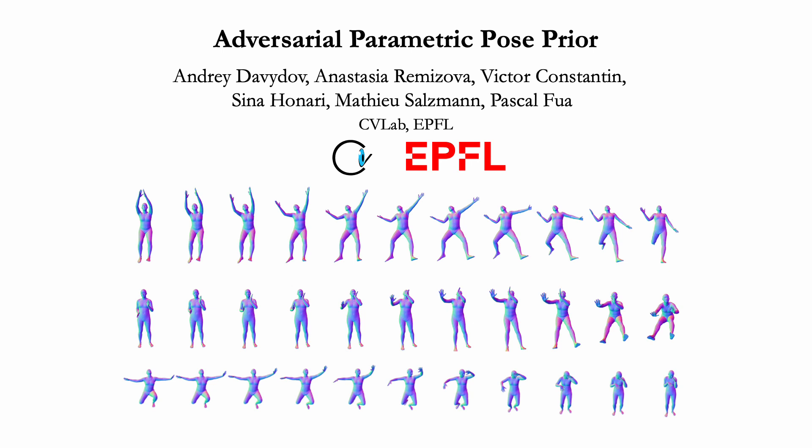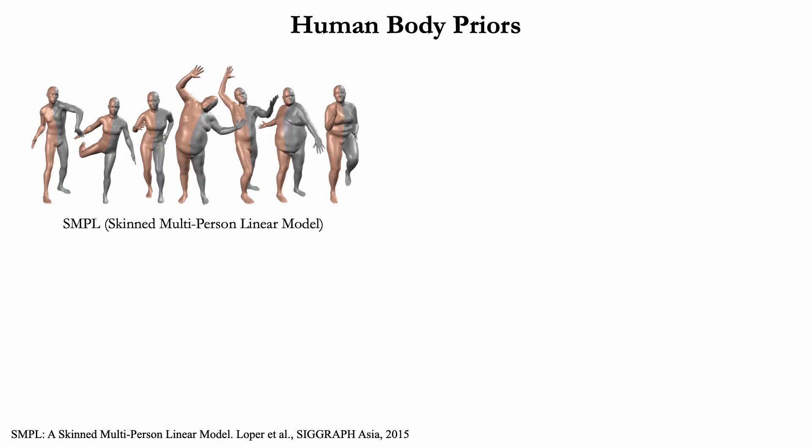Let me present our paper about adversarial parametric pose priors. In recent years, great body models have been proposed. SMPL is one of the most popular ones. Bodies are parametrized by shape parameters learned as PCA weights and pose parameters in the form of joint angles.